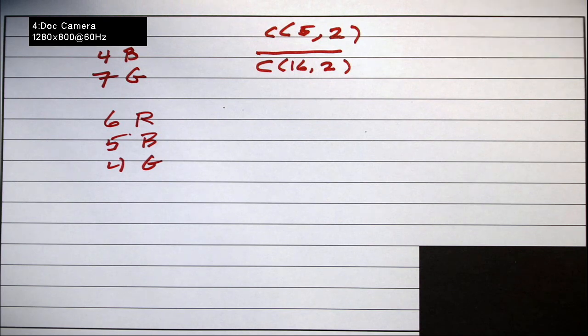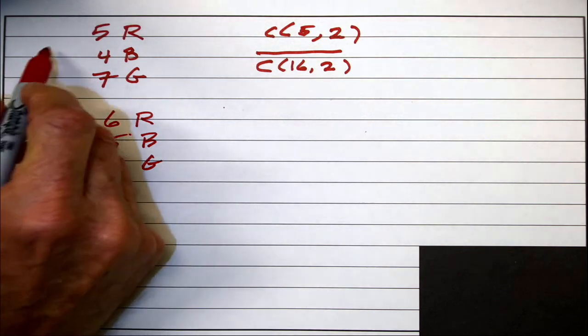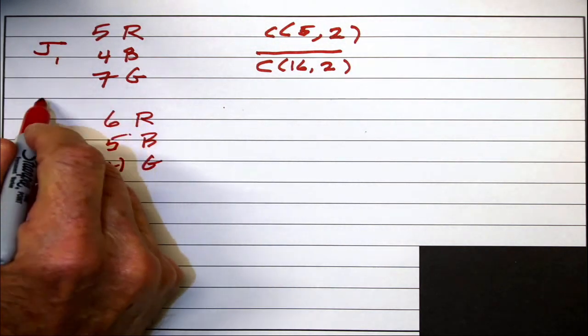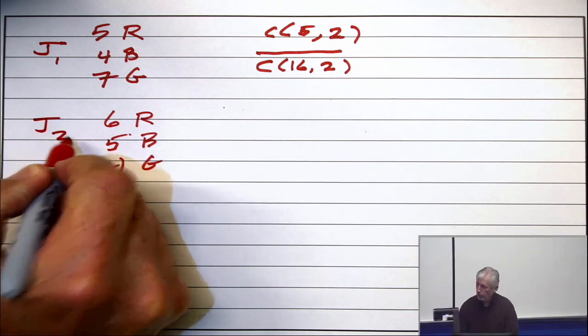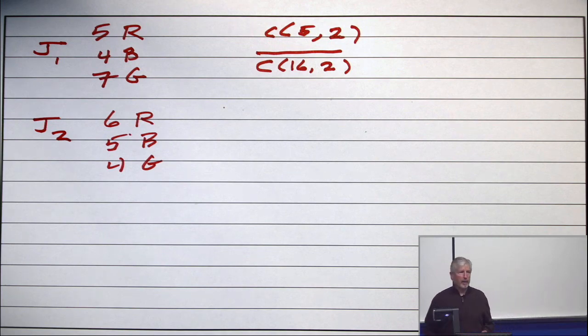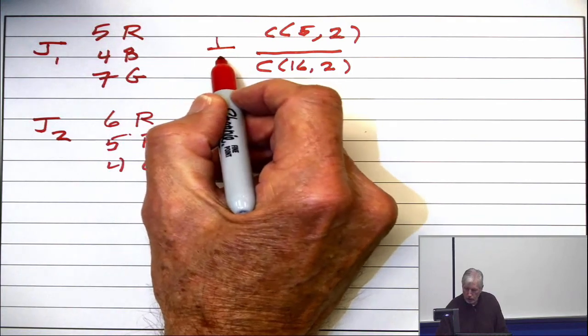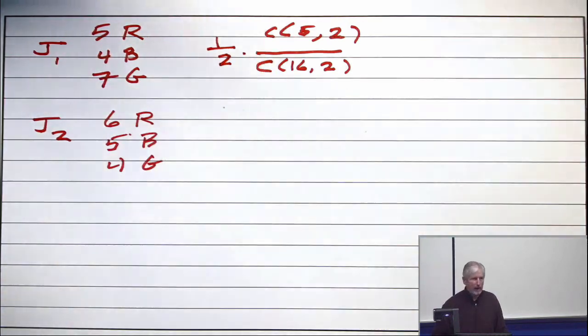So now I have jar number one and I have jar number two with different distributions. But I'm going to pick a jar at random. And I want to know what's the probability that I get both reds. All right. So half the time I'm going to choose the first jar. So half times that.